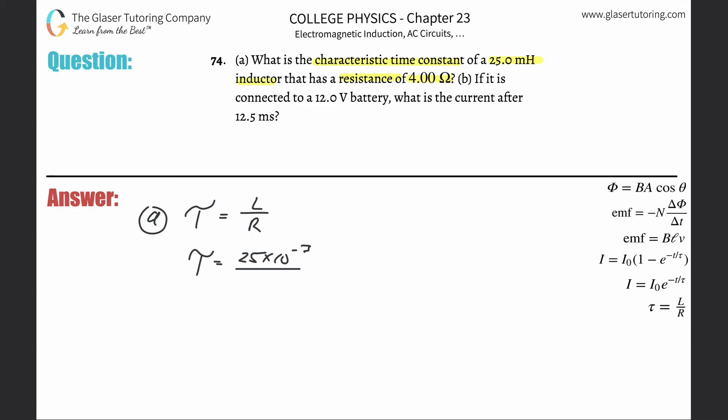Then the resistance here is 4 ohms. So that's good. There's nothing to do there. And we're simply now going to take out the calculator and plug it in. So this is going to be 25 times 10 to the minus 3 divided by 4. So this works out to be about 6.25 times 10 to the minus 3 seconds.